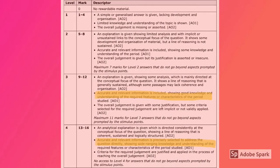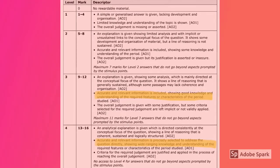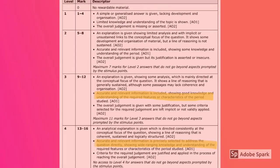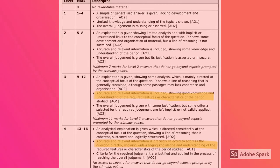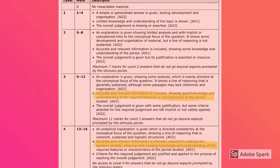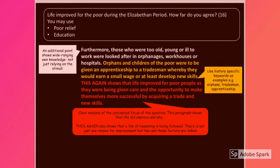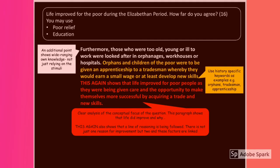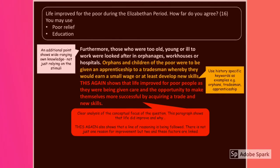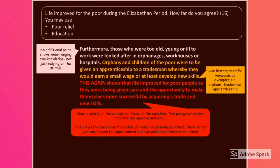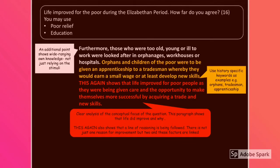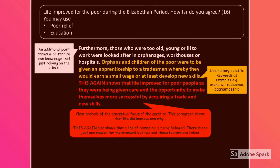If you're pushing for a level 6 or level 7, you want to try and put in a couple of different points that support your point of view. This could be by developing existing explanations or by adding new content, which also addresses the conceptual focus of the question. 'Furthermore, those who were too old, young or ill to work were looked after in orphanages, workhouses or hospitals. Orphans and children of the poor were to be given an apprenticeship to a tradesman, whereby they would earn a small wage or at least develop new skills. This again shows that life improved for poor people as they were being given care and the opportunity to make themselves more successful by acquiring a trade and new skills.'